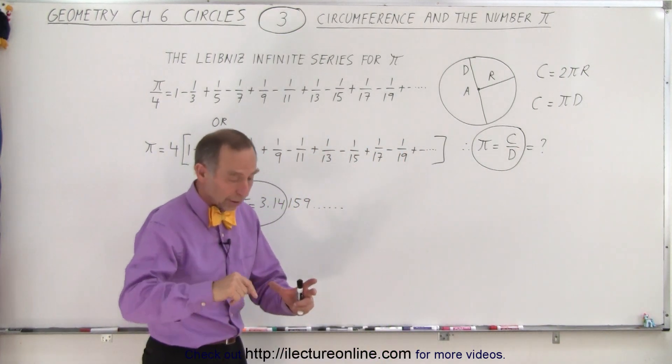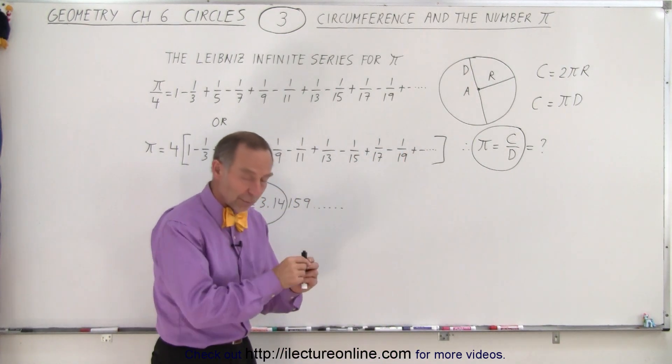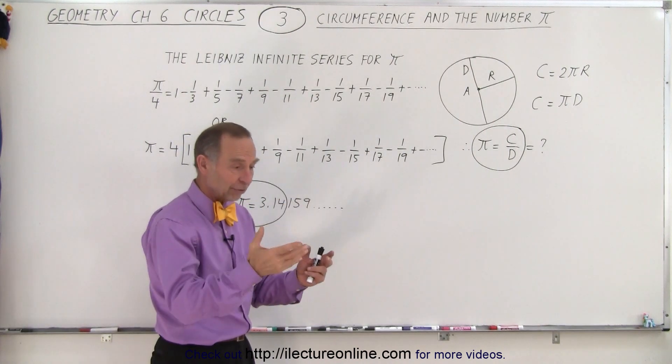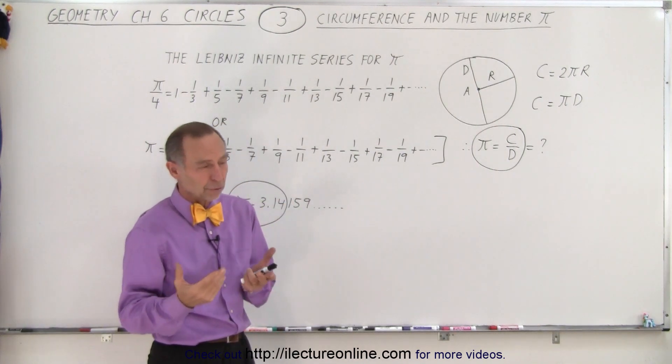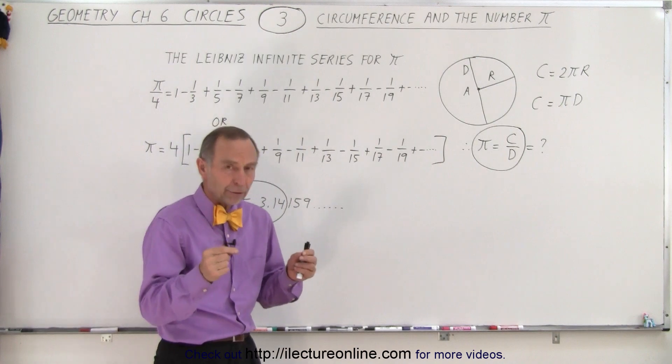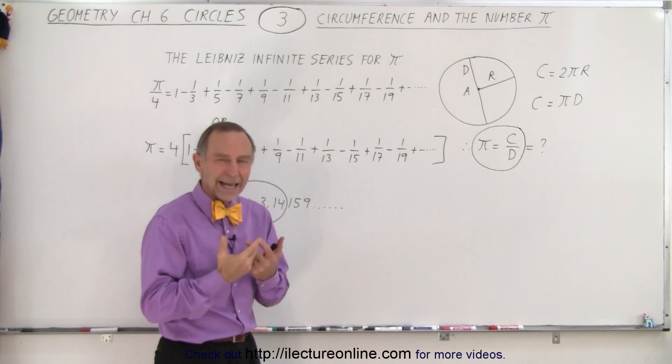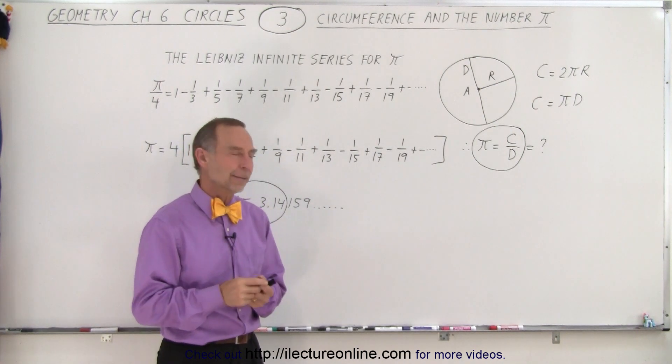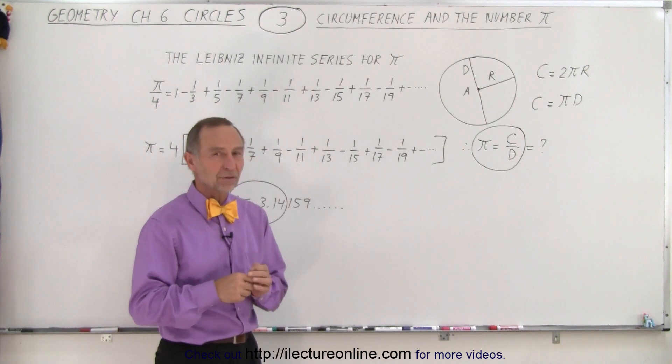So if you take a circle and measure the circumference and the diameter, and divide the circumference by the diameter, you will get the number π. But of course, you can't measure it perfectly, and so you really can't get the exact number for π. And so that was always a big mystery.